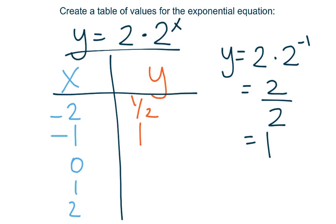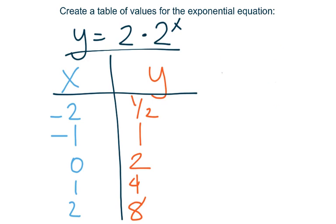If I continue plugging in the rest of my values, I can see that y = 2 when x = 0, y = 4 when x = 1, and y = 8 when x = 2. Let's try another one.